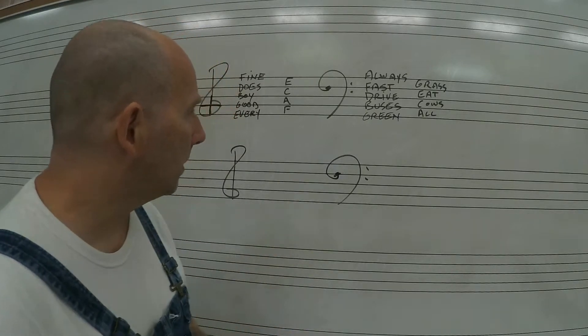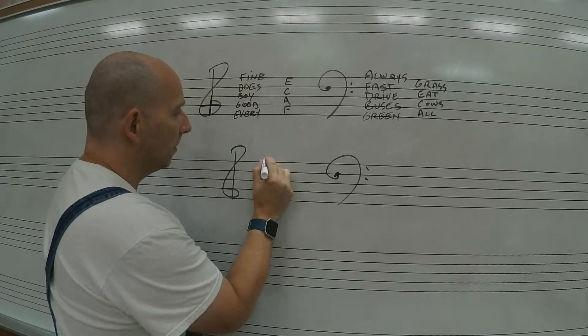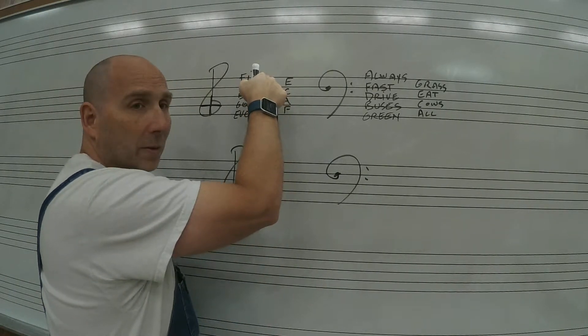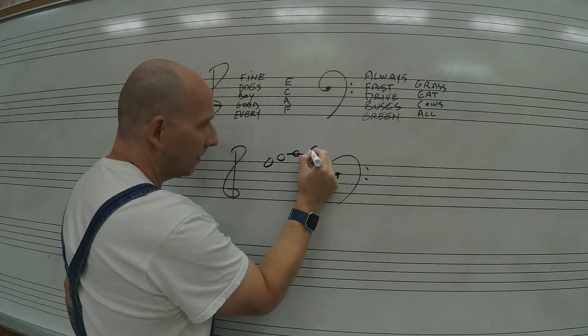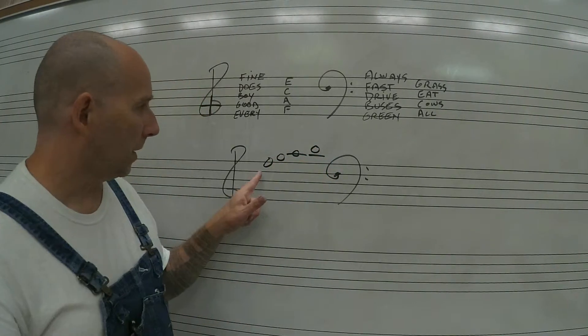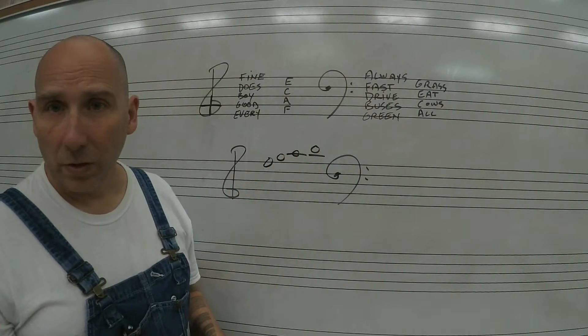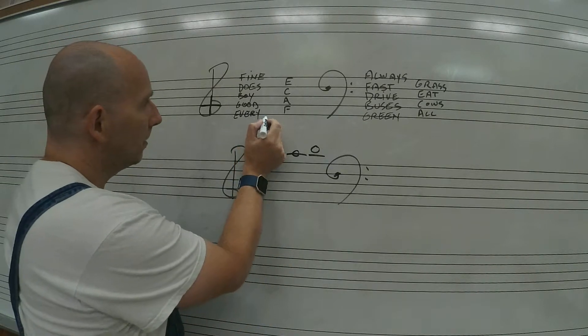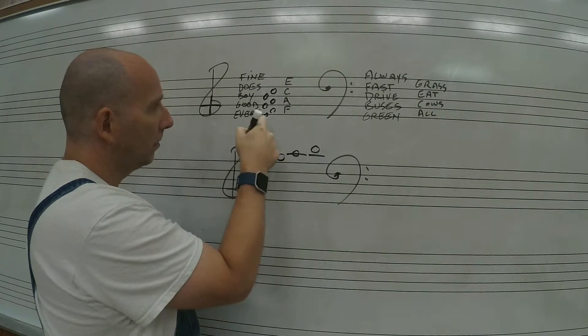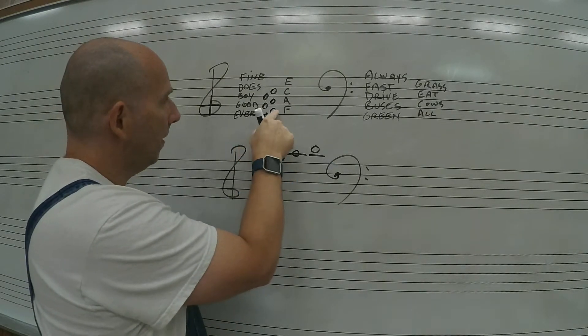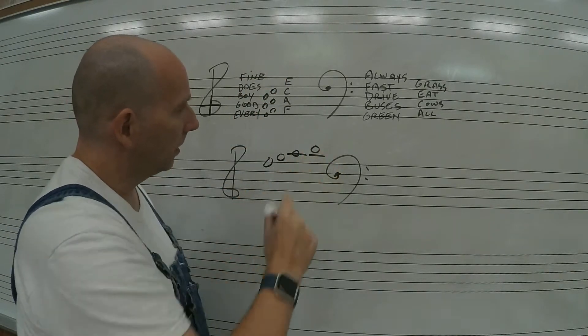One thing we need to talk about here on the treble and bass staff are ledger lines. So if the top line of a treble clef is an F, we can continue past the end of the staff by continuing up the alphabet: F, G, A, B. You can also notice here if we go line, space, line, space, line, space going up here, we are going up the alphabet: E, F, G, A, B, C, D, E, F, and then we would continue on up G, A, B.